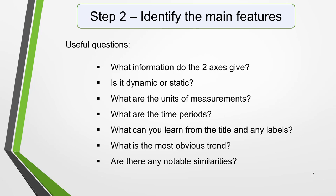There will be lots of information in the graphic to help you identify the main features. Here are some useful questions to ask: What information do the two axes give? What are the units of measurement? What are the time periods? What can you learn from the title and any labels? What's the most obvious trend and are there any notable similarities? I give more detail on how to use these questions, plus downloadable checklists for identifying the main features of all seven different types of academic Task 1 questions in the lesson on how to understand and analyse Task 1 questions.